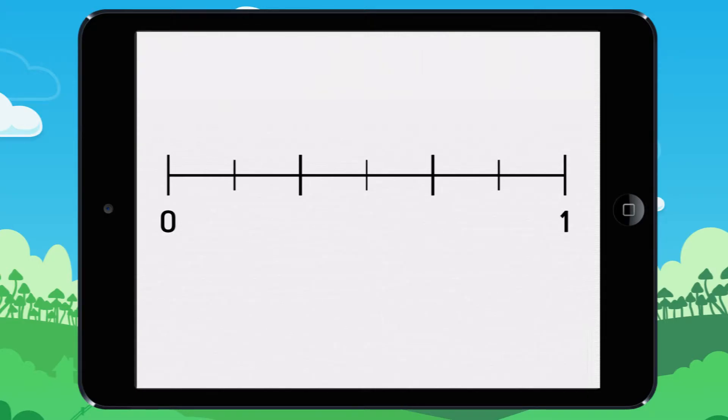This is a number line marked from zero to one. The large markers represent thirds. The small markers represent sixths.